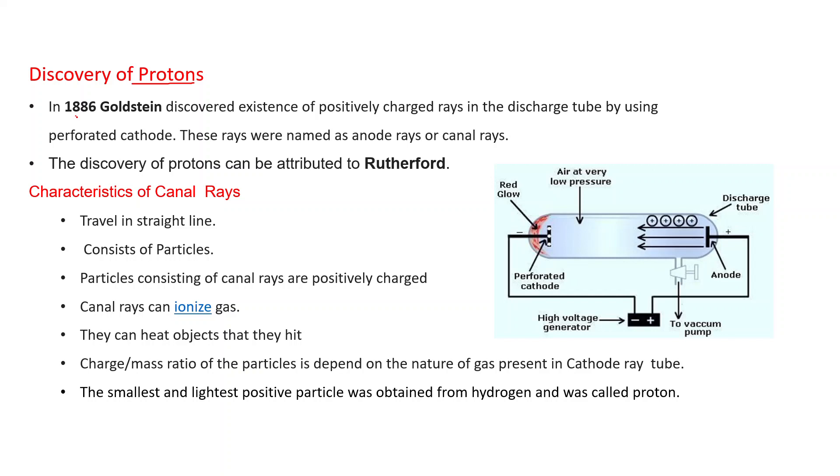Discovery of protons. In 1886, Goldstein discovered existence of positively charged rays in the discharge tube by using perforated cathode. These rays were named as anode rays or canal rays. You can see this setup for the experiment. This is perforated cathode. And these radiations seem to coming from anode. That's why termed as anode rays. And these are passing through these holes of this perforated cathode. And these holes can be regarded as canals. That's why these were termed as canal rays. The discovery of protons can be attributed to Rutherford.